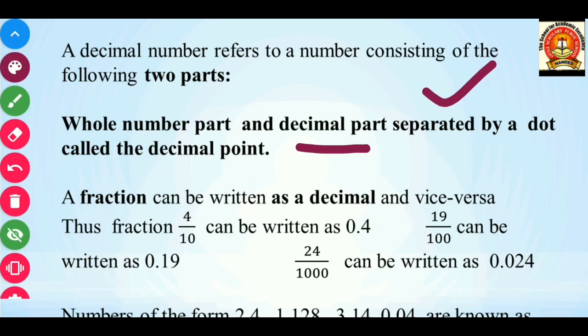So how? Just look at this example. We are having the fraction 4 upon 10. So this 4 upon 10 you can represent as 0.4. Here, the denominator contains 10, which is 10 to the power 1. So removing this 10 means you are going to remove one zero, and you need to place the decimal point after 1 digit from the right-hand side.